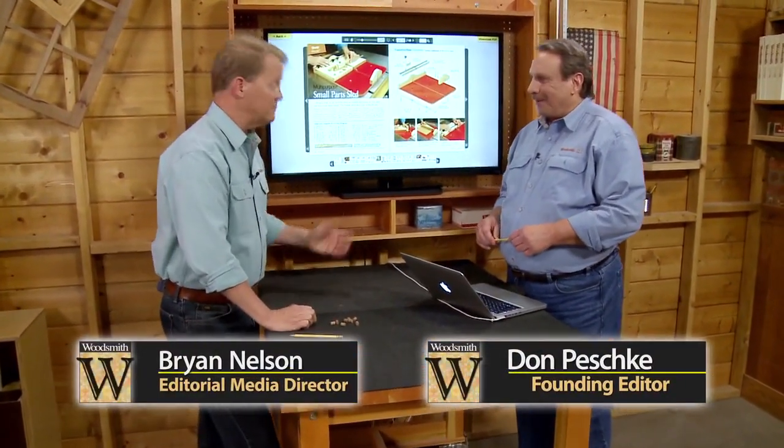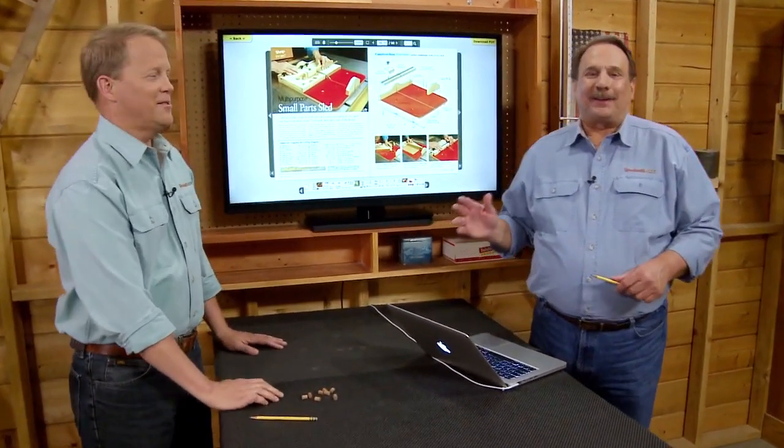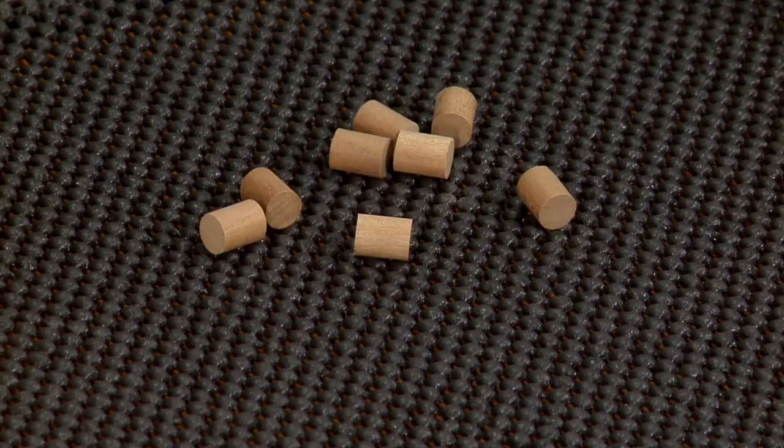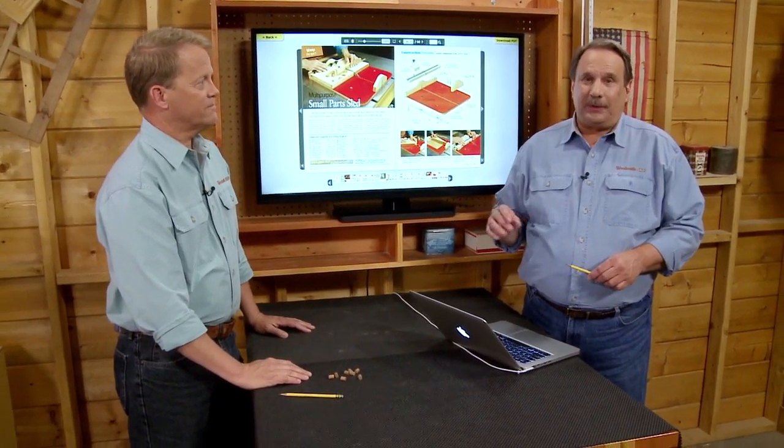You've actually been working here in the shop, and at the table saw too. So we've been talking about cutting small parts and the two big considerations there. One, first of all, is safety because they're small parts. Keep your fingers out of the way.